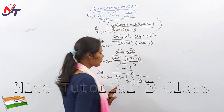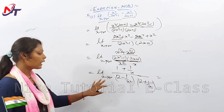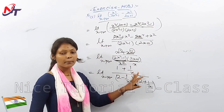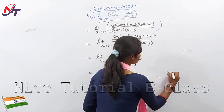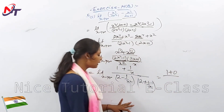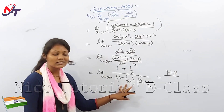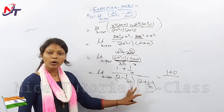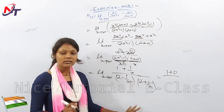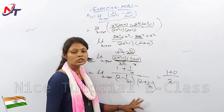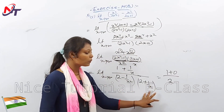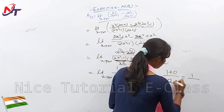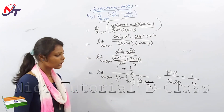Now we put x = infinity. So 1/x = 1/infinity = 0. Therefore the numerator becomes 1 plus 0 = 1. The denominator: 2 minus 1/x³ — that is 1/x times 1/x times 1/x = 1/infinity times 1/infinity = 0. So 2 minus 0 = 2, and 2 plus 0 = 2. So the result is 1 divided by (2 times 2) = 1/4.